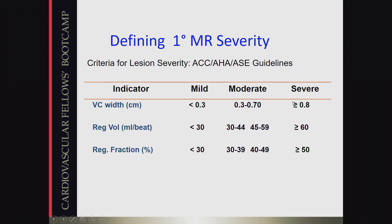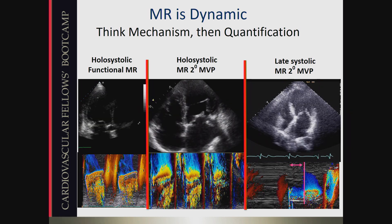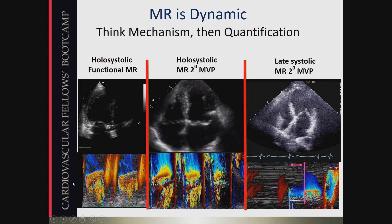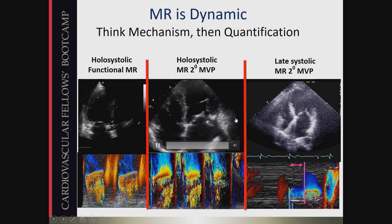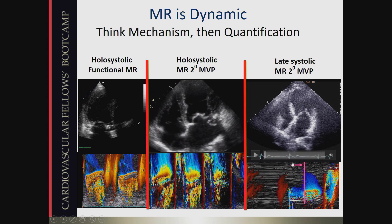Key quantitative thresholds for severe primary MR when LV systolic function is normal: regurgitant volume greater than 60 mL and regurgitant fraction greater than 50%. Also recognize that not all MR happens throughout the entire cardiac cycle — some is only early systolic, some only late, some holosystolic, which affects the murmur and the flow consequence. Holosystolic functional MR differs from holosystolic prolapse, and late systolic prolapse — where more than half of systole has passed before MR onset — must be recognized during quantitation because timing matters.